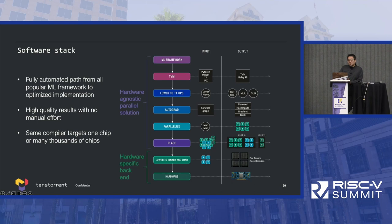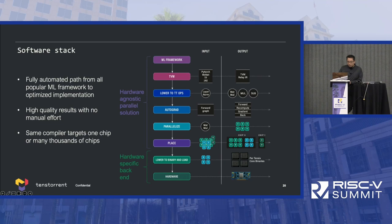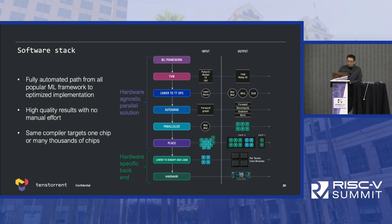TenStory is not only a chip company. To address machine learning problems, you need an SDK. The SDK maps PyTorch all the way down to parallelized, placed binaries on hardware — a static mapping all the way down to our binary hardware. It's fully automated for all popular machine learning frameworks with optimized output. High-quality results with no manual effort — no hand-holding, just compile directly down to hardware. The same compiler targets from one chip to many thousands of chips. That's our goal.